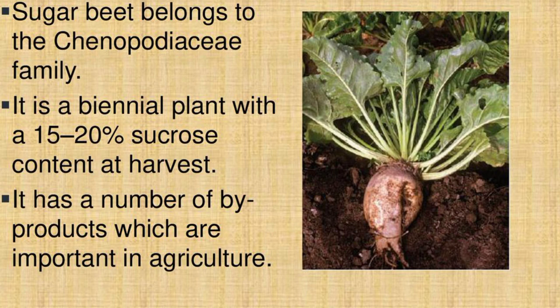Trap crops such as wild radish and oil mustard from the Cruciferae family have been developed and used successfully in Germany. These crops trigger eggs to hatch and juveniles to infect, but they fail to develop into adults and do not reproduce. Specific varieties have been developed for sugar beet cyst nematode management, but they will have little effect on the false root-knot nematode. Growers should be aware of the presence of a mixed population of these parasites when choosing management methods.